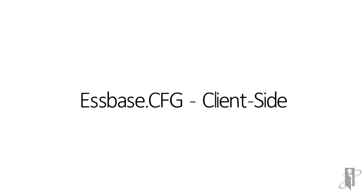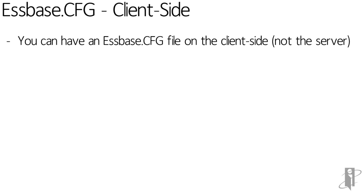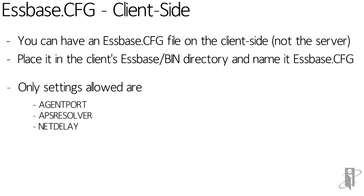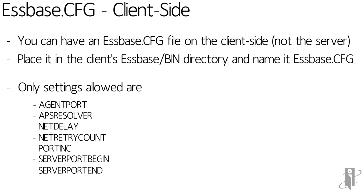The sspace.cfg is primarily a server-side configuration file, but you can also create one on the client side. You need the sspace runtimes installed, and if you do, there will be an sspace bin directory — though generally no sspace.cfg, so you'll need to create it there. Only seven settings are allowed in the client-side cfg: agent port, APS resolver, net delay, net retry count, port inc, server port begin, and server port end. The most common ones to change are net delay and net retry count, due to a "timed out talking to the server" error that advises increasing these values — an error most people mistake for a server-side issue.